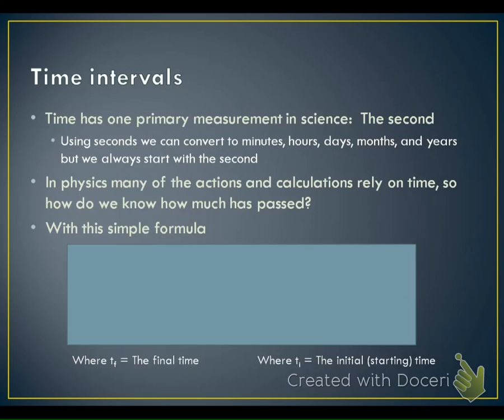In physics, many of the actions and calculations rely on this time, so we need to be able to calculate how much time has passed. We know if we have the total time of something we can time it, but what if we don't have a stopwatch available? That's where this equation comes into play. The equation is very simple.